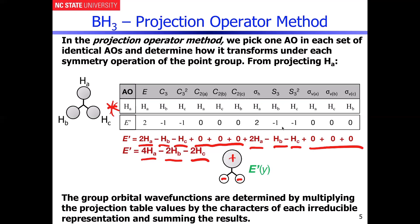And the magnitudes of them are effectively four here, two here, and two here. You can see I'm attempting to make this look twice as big as these, but I didn't quite hit the mark. But that is the shape of the E prime Y group orbital.